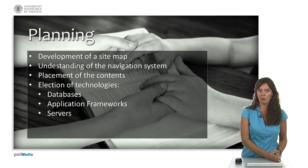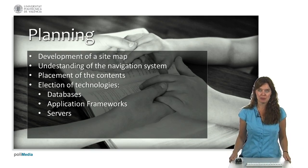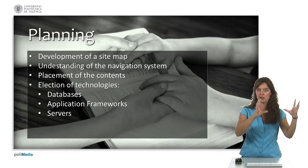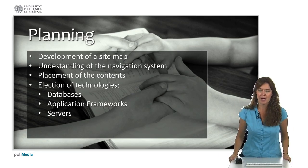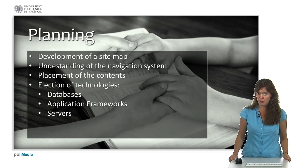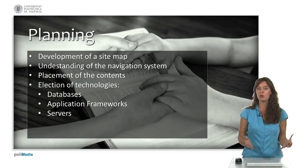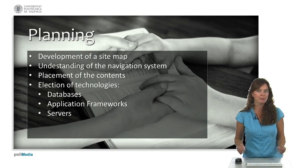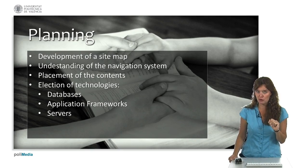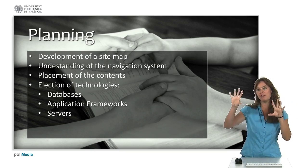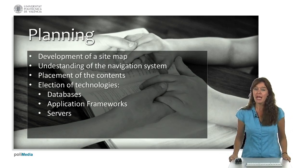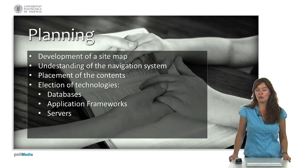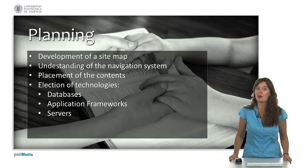Once we have that clear, we can go to the planning phase. We can make a site map so we already know the different elements and parts of content on our website. We need to understand the navigation system — do we want tabs, a menu — and how we want to facilitate navigation through the content. Then we select technologies: what type of databases, which application frameworks, and where we're going to locate our servers.